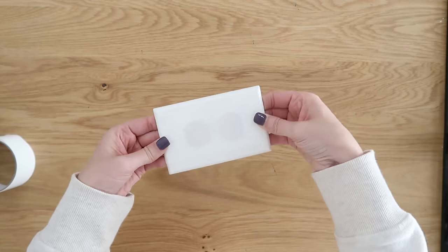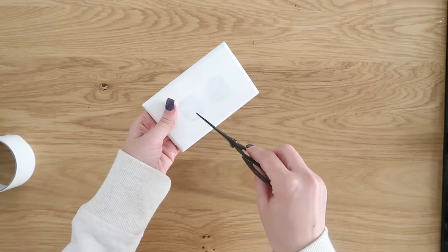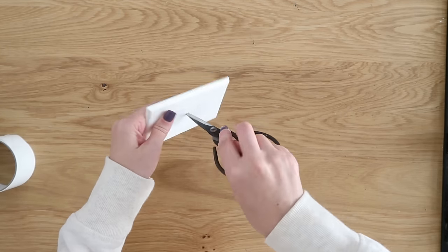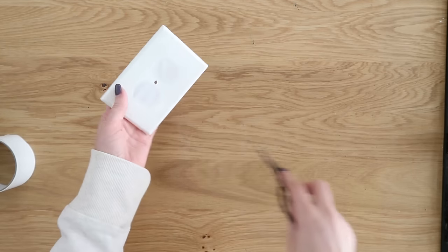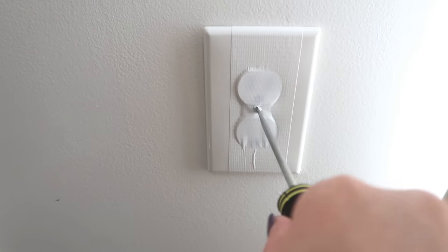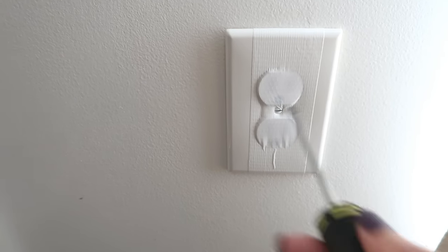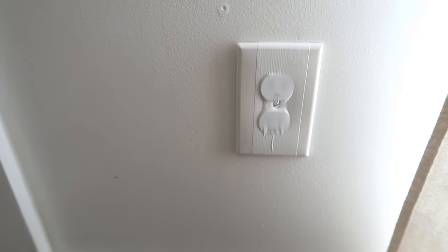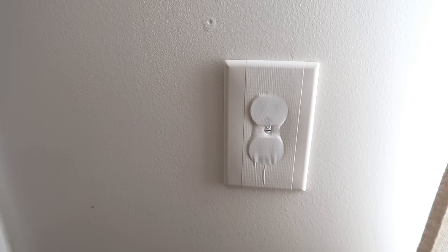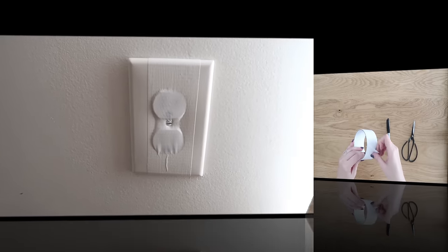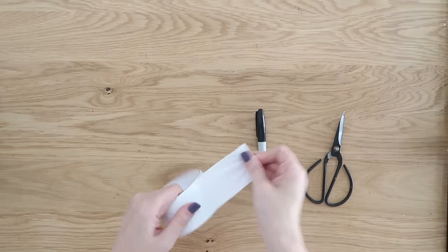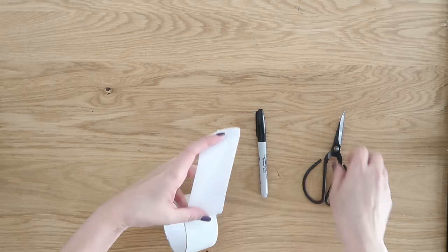Press that down firmly, grab some scissors or something sharp and route out the hole so you can reattach your plate back onto the wall. This is definitely a temporary fix and not a permanent one, but like I said, if you're in a pinch this is definitely better than nothing.